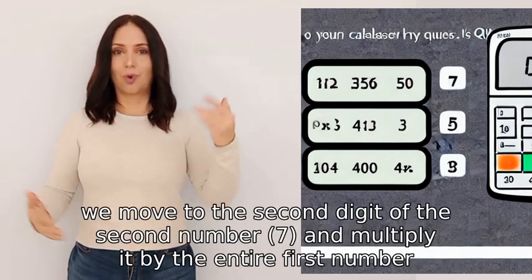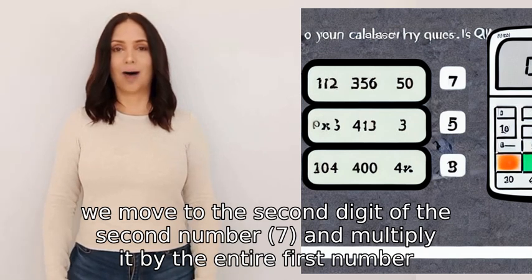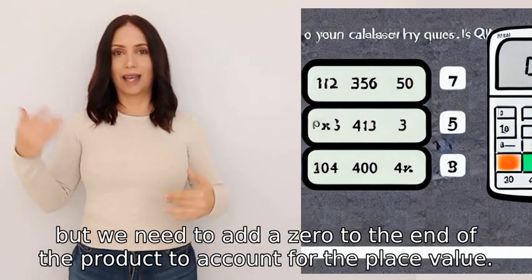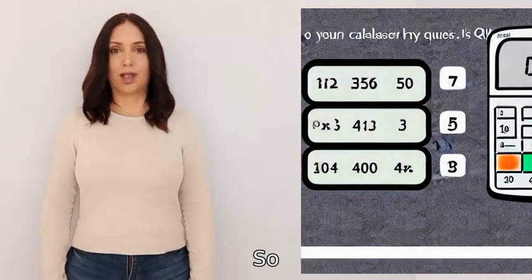Then we move to the second digit of the second number (7) and multiply it by the entire first number. But we need to add a zero to the end of the product to account for the place value.